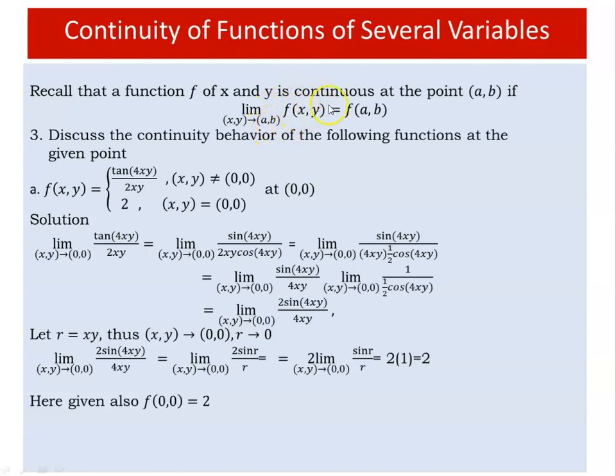The limit of this expression as (x,y) approaches (0,0). We can use the substitution r = xy approaching 0. By the squeezing theorem, 2 times the limit of sin(r) over r as r approaches zero equals 2 times 1, which equals 2. The limit is 2. Let's check the functional value at the origin. At (0,0), the functional value at the origin is also 2. The limit equals 2, so the function is continuous at the origin.